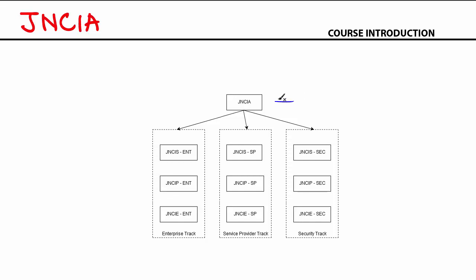JNCIA happens to be the first in the list of Juniper Certifications. It's a common examination and it's your starting point into Juniper Certifications. Once you complete your JNCIA, you then move into JNCIS. By the way, JNCIA stands for Juniper Networks Certified Internet Associate, so it's an associate level certification.